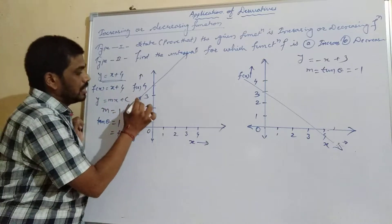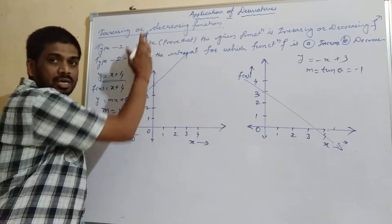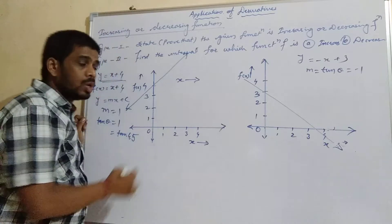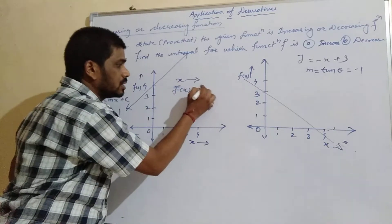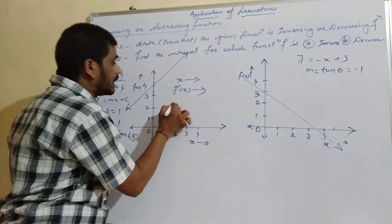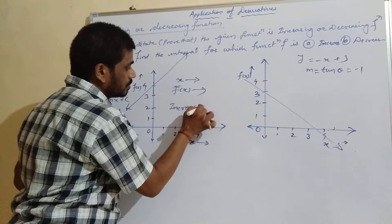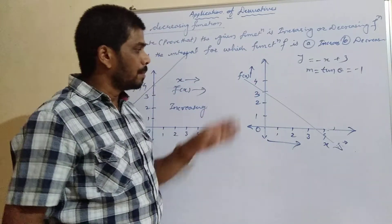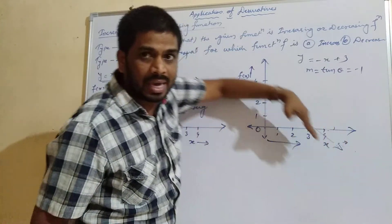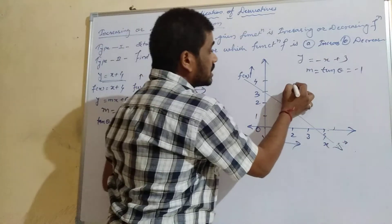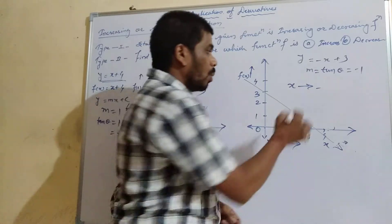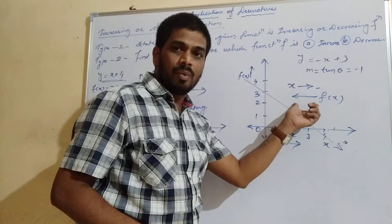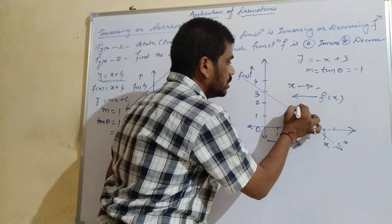Here x is increasing, so y is also increasing — f of x is also increasing. Then it is called an increasing function. On the other hand, here x is increasing but y is decreasing — f of x is decreasing. When x is increasing and y is decreasing, we can say that the function is decreasing.